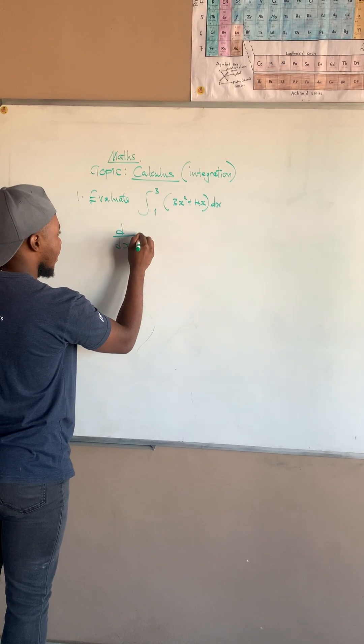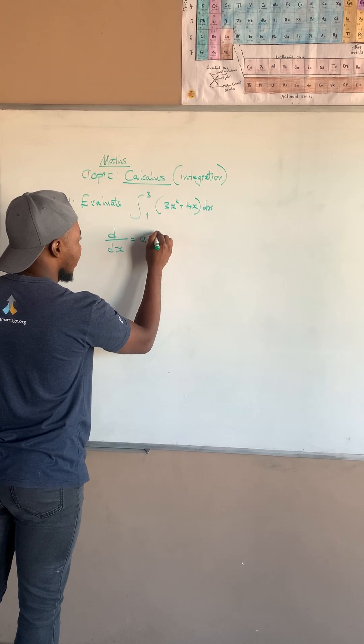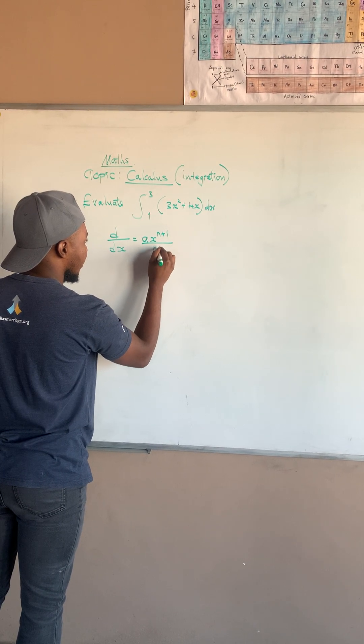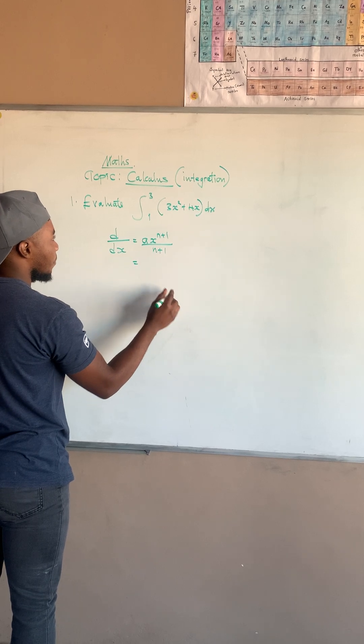And then the second part is ax^(n+1) over n+1.